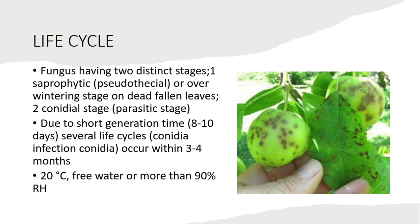There are two stages to remember. One is the perpetuation or overwintering stage — this is the pseudothecial stage. The other stage is the conidial stage. In the conidial stage, conidia infect the leaves and plant parts. Due to a short generation time of 8 to 10 days, several life cycles can be completed, and there can be conidial infection. Several life cycles occur within 3 to 4 months.